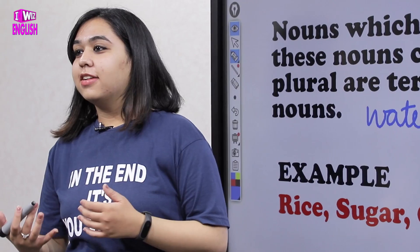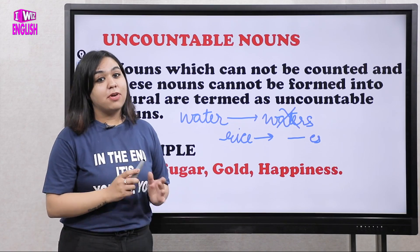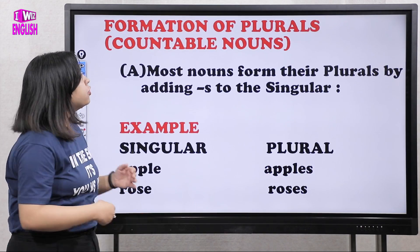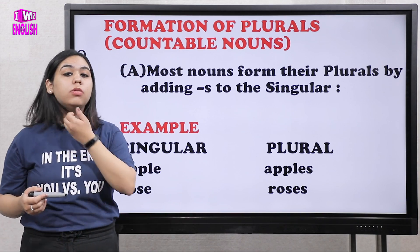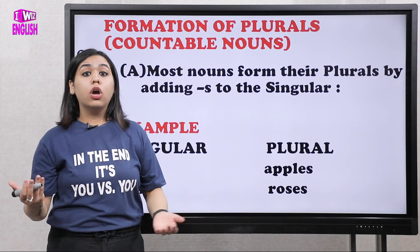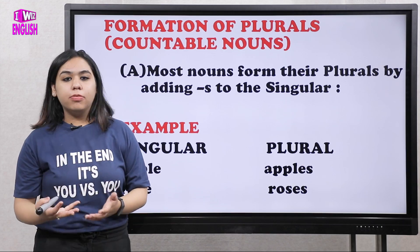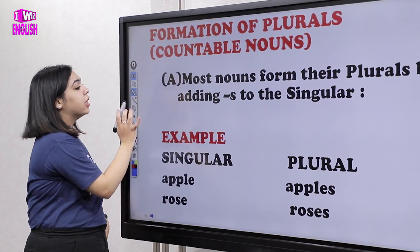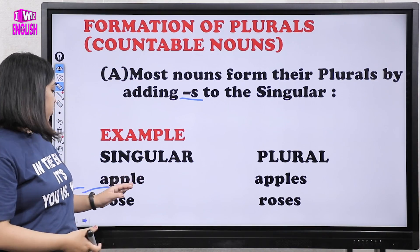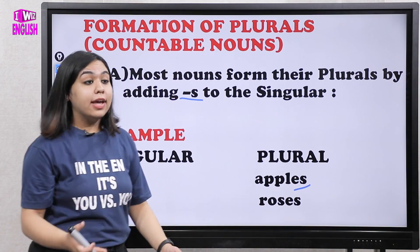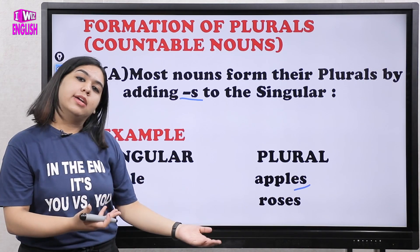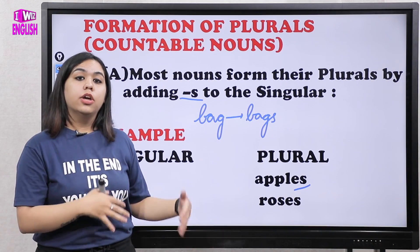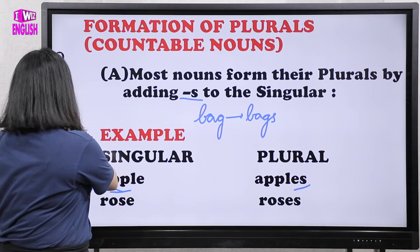People generally get confused about uncountable nouns, but I hope it's clear now. Moving on to the formation of plurals — how do we make countable nouns plural? The first rule: most nouns form their plurals by simply adding -s to the singular. For example: apple → apples, rose → roses, bag → bags, toy → toys.